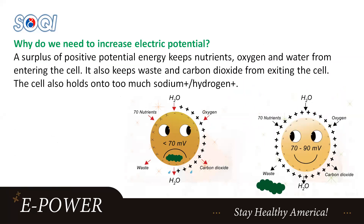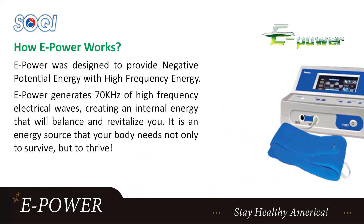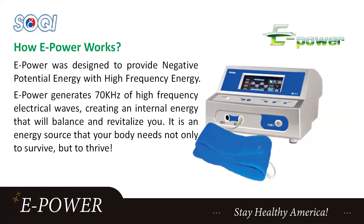For example, if you take a look at this picture here — when you have too much positive potential energy on the outside of the cell, you lose the balance. So what you need to do is supply your body with enough negative potential energy to keep it at 70 to 90 MV. Why is it important? Imagine the cell membrane — it's like a gate. You need to make sure that this membrane is very permeable, and that would happen only if you have a good positive and negative balance.